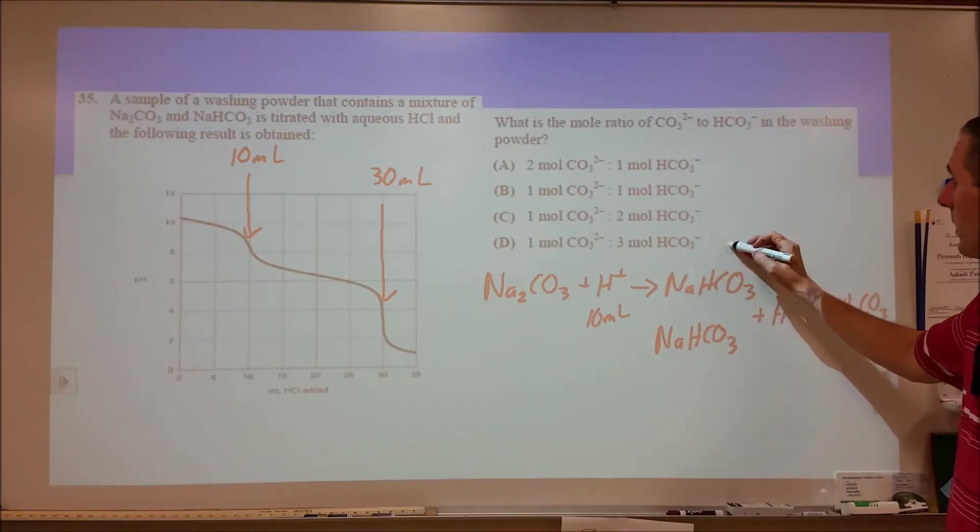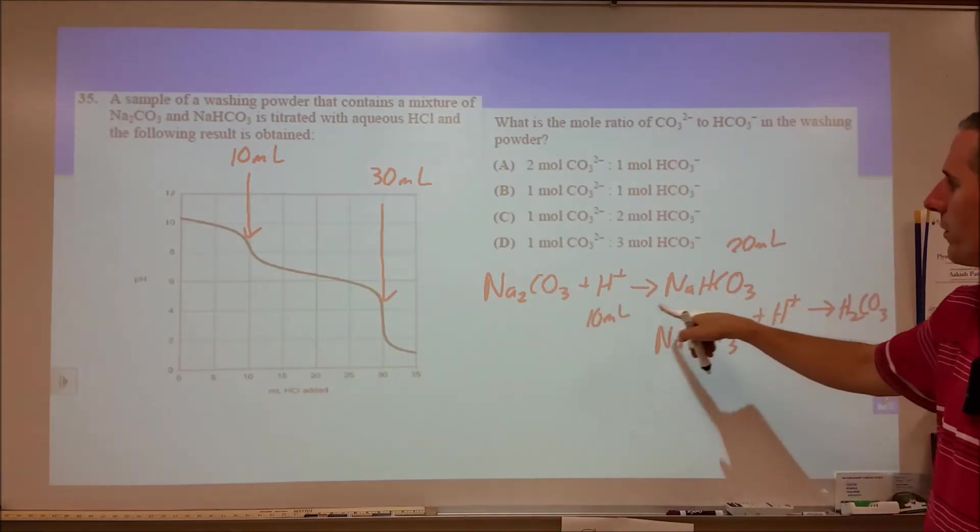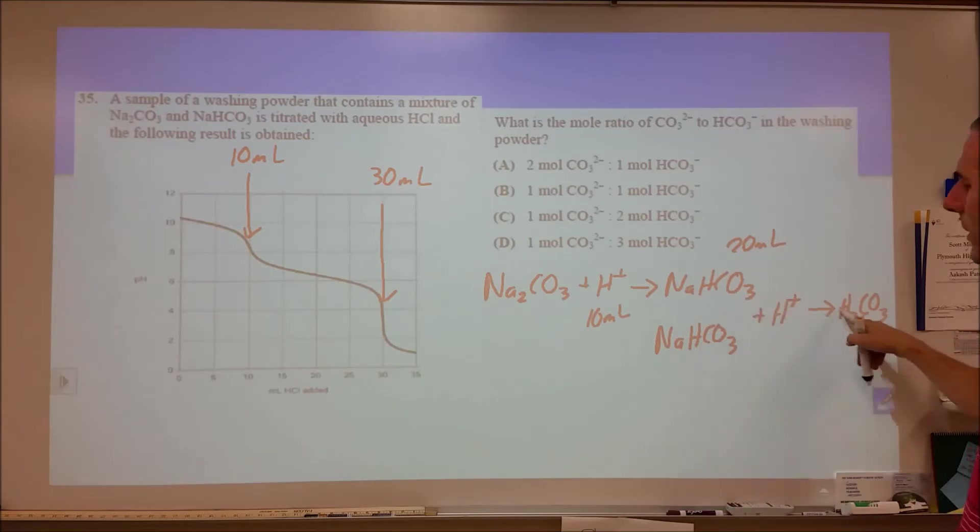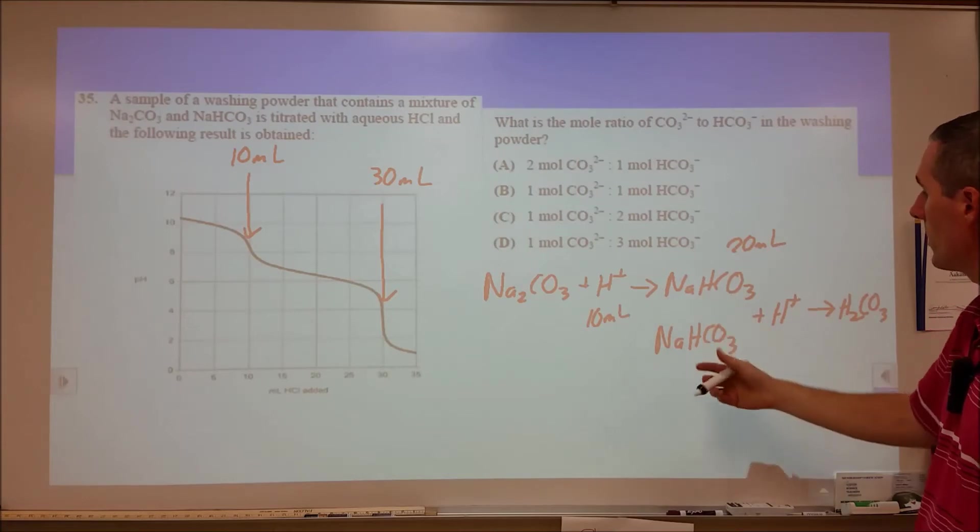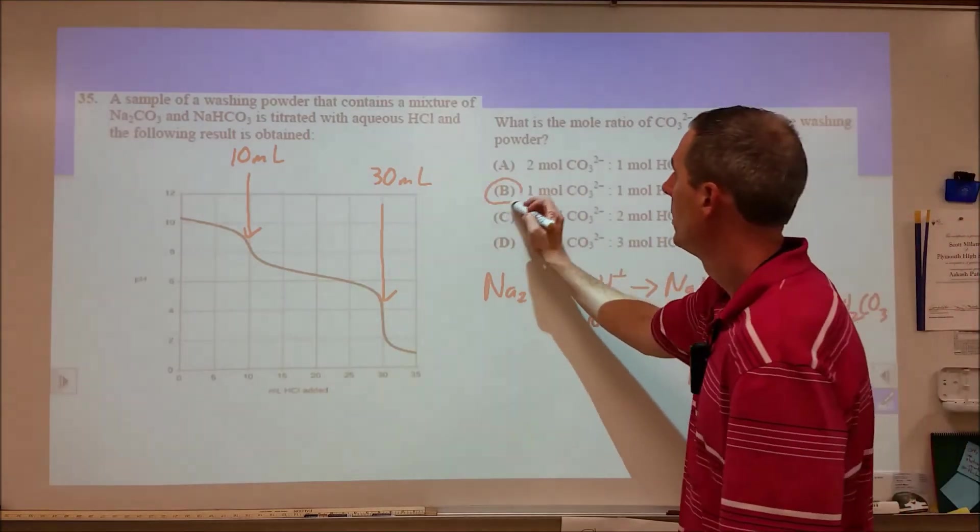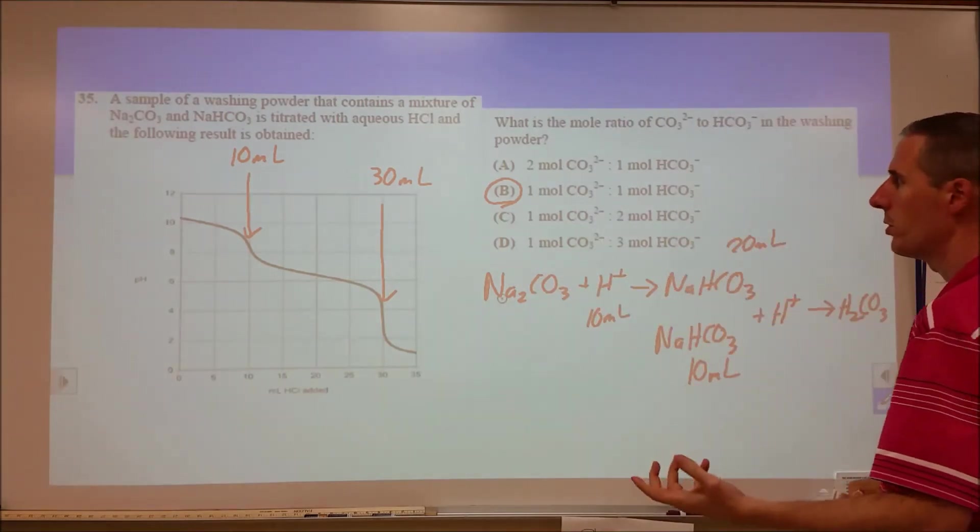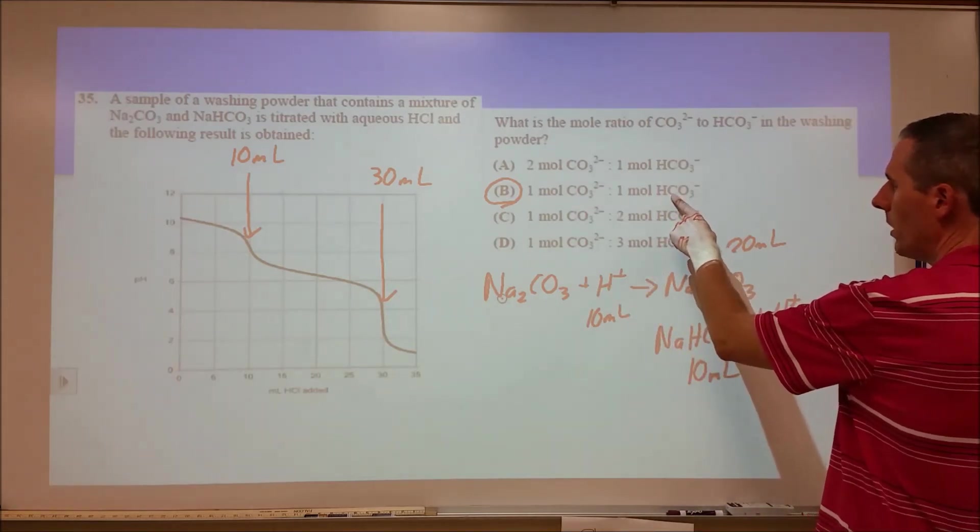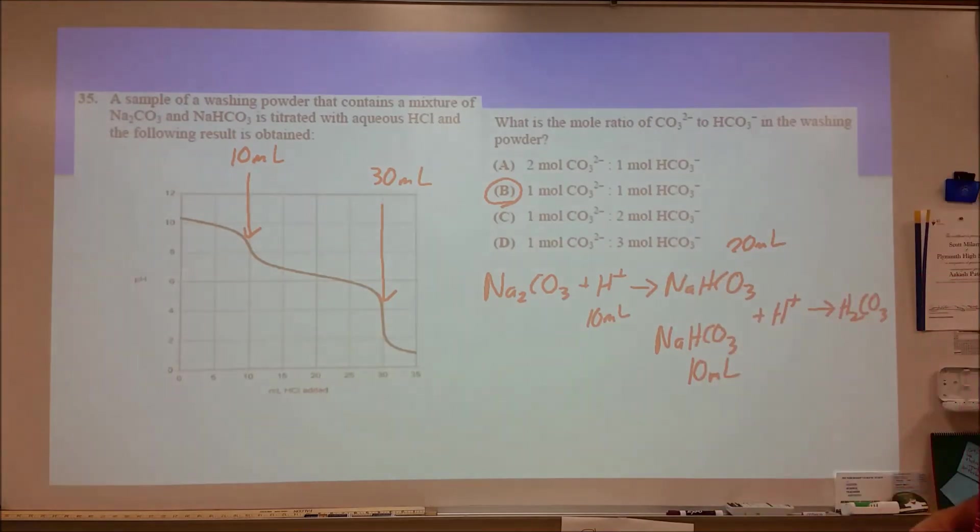It takes 10 milliliters of acid to neutralize this, turning into this completely. Then it takes another 20 milliliters. Because however much sodium carbonate we had, we're going to need the same amount to do the second diprotic component. So we need 10 of these milliliters to titrate this, which means we need 10 milliliters to titrate the original amount of sodium bicarbonate. So the mole ratio is actually 1:1. It's taking 20 milliliters to neutralize the carbonate because it reacts with two successive hydrogens. This one only reacts with one, so we need 20 milliliters for this, 10 to react with that, but we have a 1:1 mole ratio.